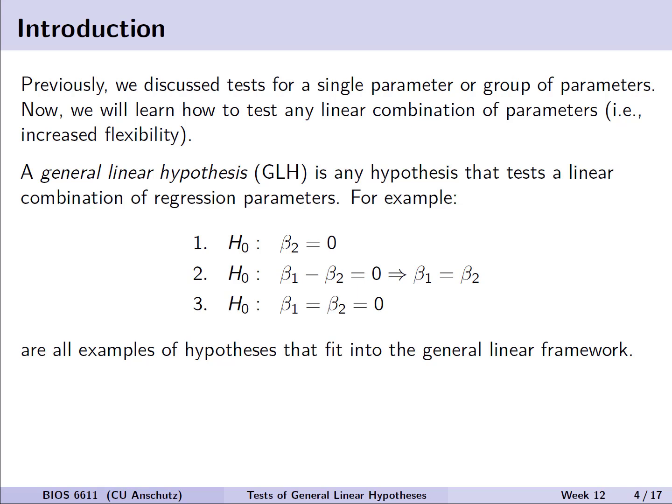By definition, a General Linear Hypothesis or GLH for shorthand is any hypothesis that tests a linear combination of regression parameters. For example, we can test if beta 2 equals 0, test beta 1 minus beta 2 equal to 0, or test if beta 1 equals beta 2 and both are equal to 0. These are all examples of hypotheses that can fit into this general linear framework.